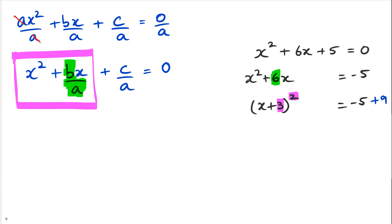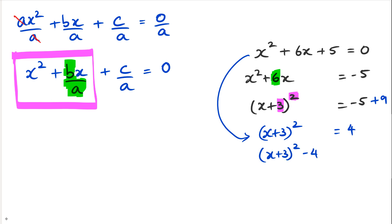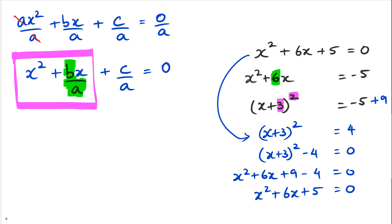The problem is that by putting the 3 inside the square there's an extra 9 added, so to balance it out we add 9 to the right-hand side. That gives us (x + 3)² = 4, or equivalently (x + 3)² − 4 = 0. If we expand (x + 3)² we get x² + 6x + 9 − 4 = 0, which is x² + 6x + 5 = 0 — exactly what we started with.